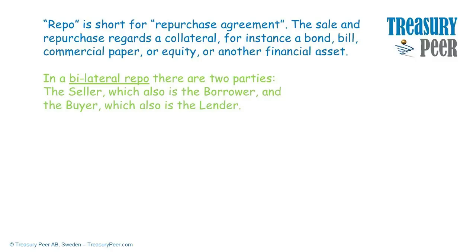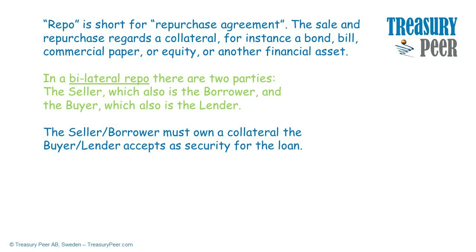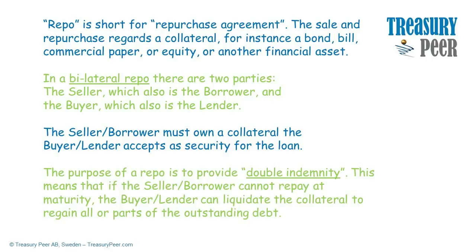In a bilateral repo there are two parties: the seller, which also is the borrower, and the buyer, which also is the lender. The seller or borrower must own a collateral the buyer or lender accepts as security for the loan. The purpose of a repo is to provide double indemnity. This means that if the seller or borrower cannot repay at maturity, the buyer or lender can liquidate the collateral to regain all or parts of the outstanding debt.